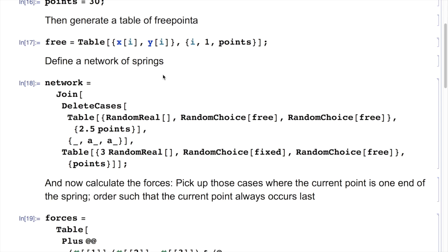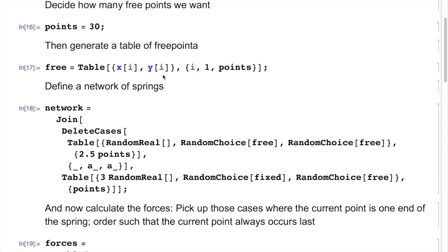Now the most important part is the thing that actually defines my random network of springs. I ignore first of all the join and the delete cases, let's concentrate on the word table over here. I make a table of roughly two and a half times the number of points, so in this case that's 75 things, which contain three elements. It contains a random real, a random choice from the free, and another random choice from the free. So what that really does, it says random real will be my strength of my spring, the spring constant, the stiffness of the spring.